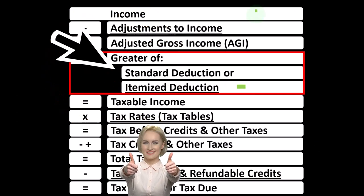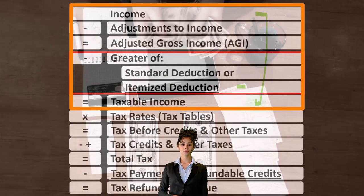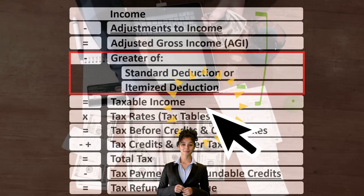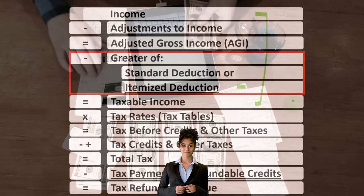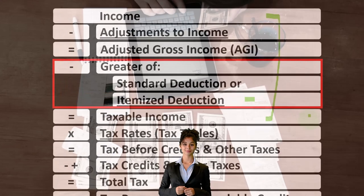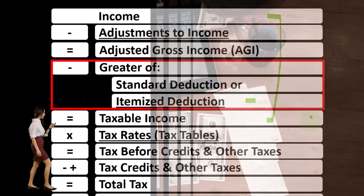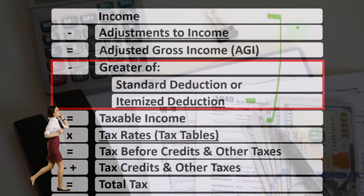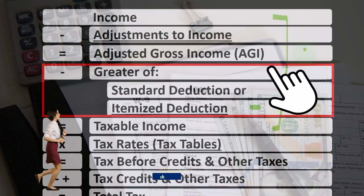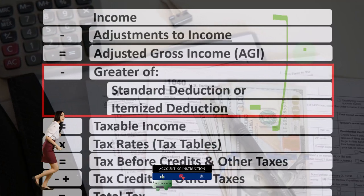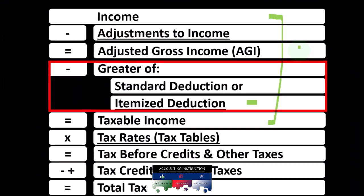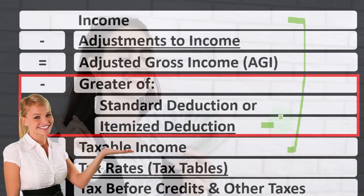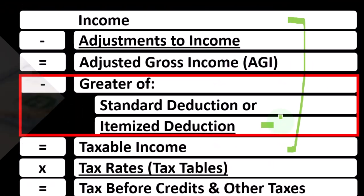Remembering that the first half of the income tax formula is in essence an income statement — we've got the income minus the equivalent of expenses being the deductions, getting down to the equivalent of net income, that being taxable income. Everything's topsy-turvy for taxes, meaning we want taxable income as low as possible. We've talked about above-the-line deductions or adjustments to income to get to AGI, and now we focus on the below-the-line deductions — the greater of the standard or itemized deductions — to get us to taxable income.